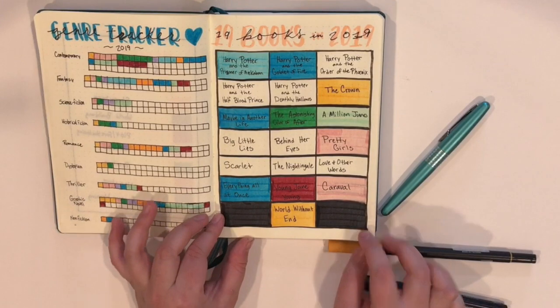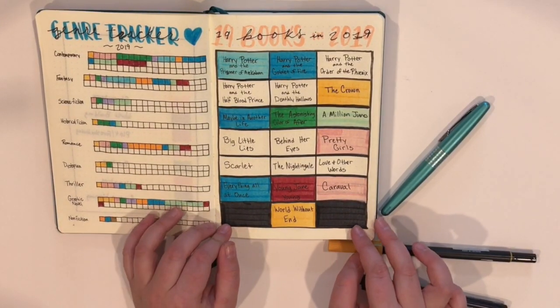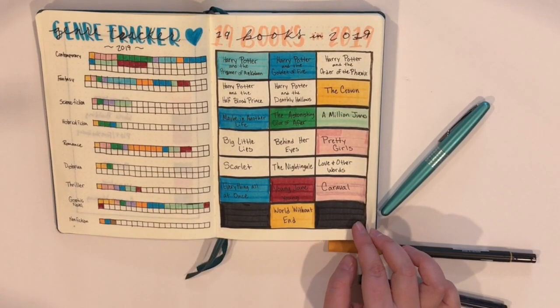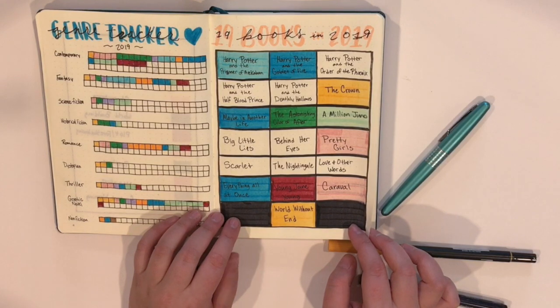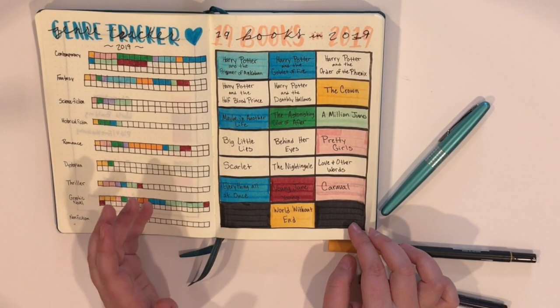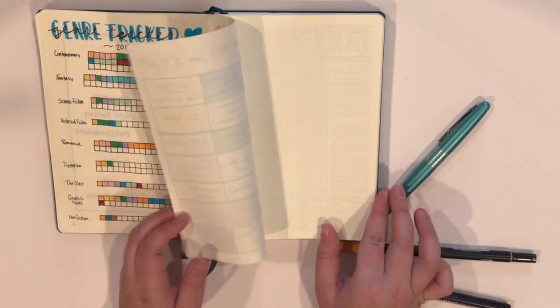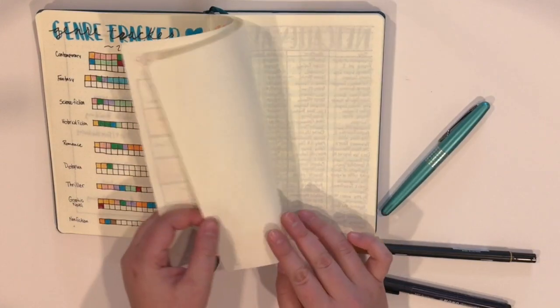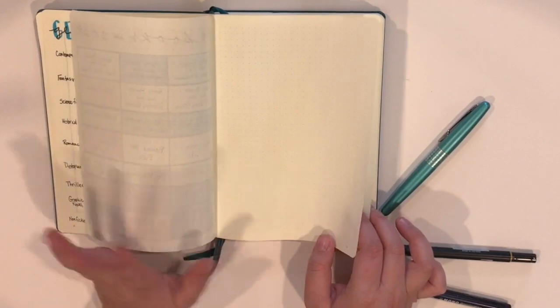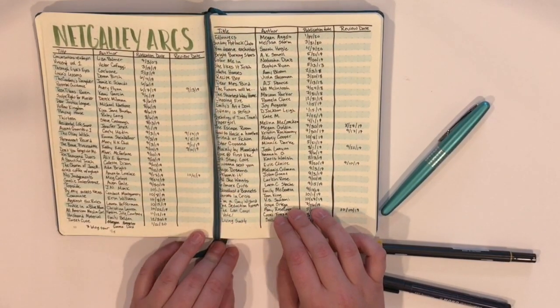This was a video that I did at the beginning of the year. This is my 19 books that I wanted to read in 2019. As you can see, I am not doing that great at it. But, that's okay. I don't know if I'll finish them by the end of the year. There's a few of them that I just don't want to read.